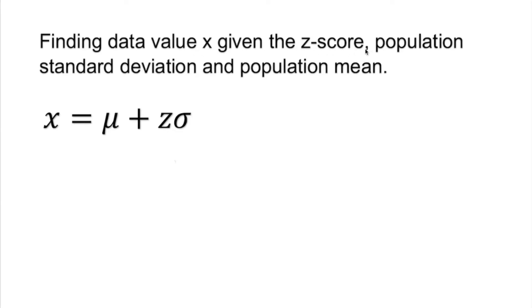Finding the data value x given the z-score, population standard deviation, and population mean. We are lucky if we have the data value formula already isolated: x equals population mean plus z-score times standard deviation. So we are lucky we can just plug it in if z-score is given.